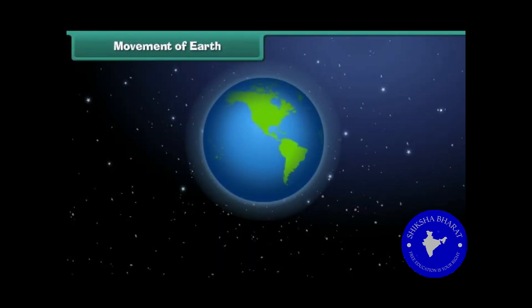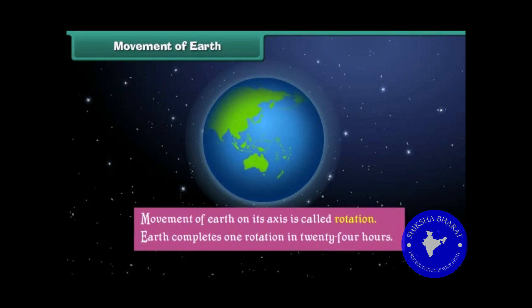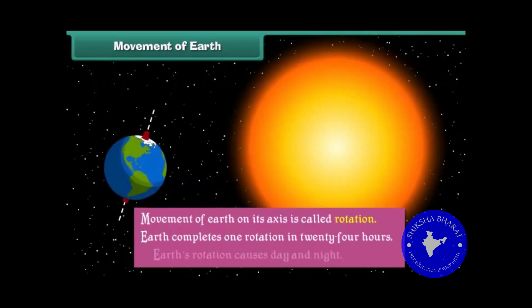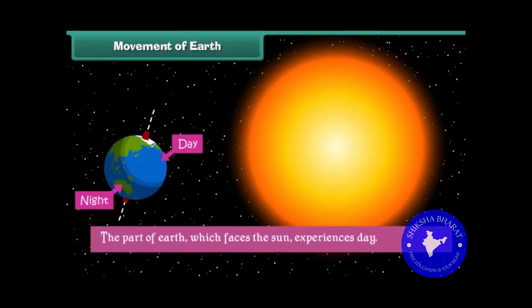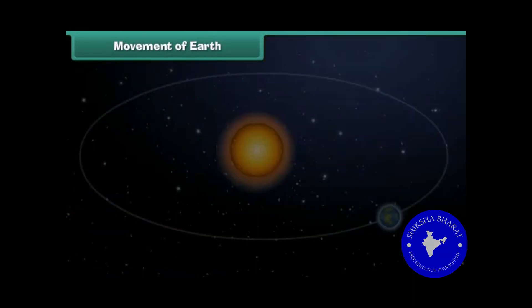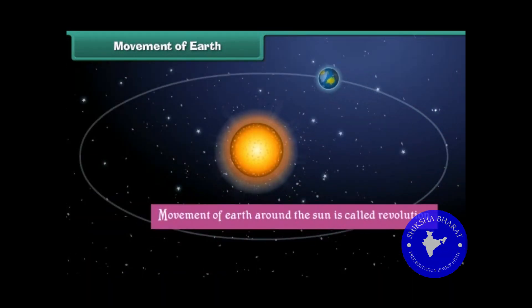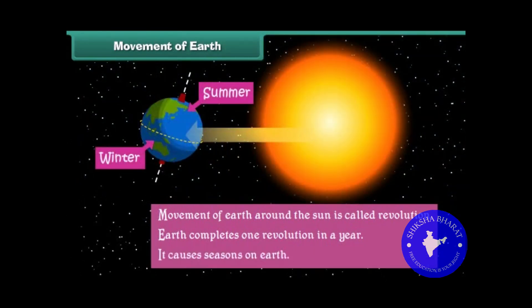Earth shows two types of movement. Movement of Earth on its axis is called rotation. Earth completes one rotation in 24 hours. Earth's rotation causes day and night — the part of Earth which faces the Sun experiences day, and the part which faces away from the Sun experiences night. Movement of Earth around the Sun is called revolution. Earth completes one revolution in a year and it causes seasons on Earth.